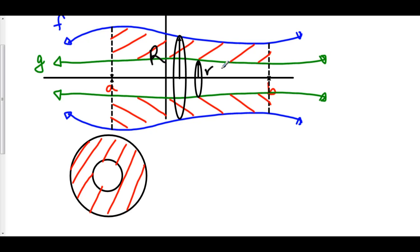And of course, the area of this cross-section is given by the area of your larger circle, pi big R squared minus the area of your smaller circle, pi little r squared.